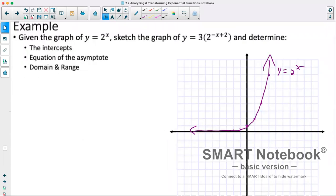We have this example given the graph of y equals 2 to the power of x, sketch the graph of y equals 3 times 2 to the power of negative x plus 2 and determine the intercepts and the equation of the asymptote, as well as the domain and range. Now first thing I'm going to do is factor this one a bit more because they haven't fully factored this part here. So this really should be y is equal to 3 times 2 to the negative of x minus 2.